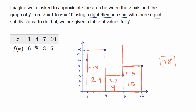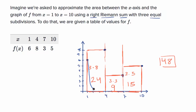Just using that table of values, we've been able to find an approximation. We don't know how good of an approximation it is — it depends on what the function is doing. There's a world where it could be a very good approximation, or maybe the function does something where this would be a very bad approximation. But we can at least do the approximation using a right Riemann sum with just this table.